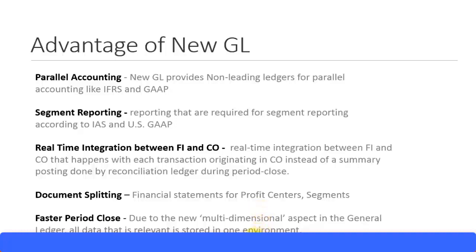There is also a multi-dimensional aspect to the general ledger with NewGL. Everything is stored in a single table — a single dimension — in one environment. At period end, you can quickly close out all the information because you don't have to go and look at multiple tables to reconcile. That is another advantage: faster period close. These are some of the advantages of having NewGL.